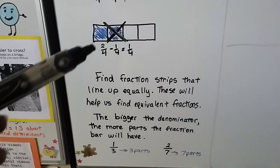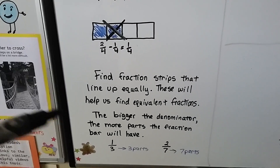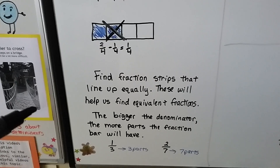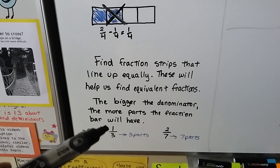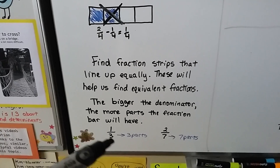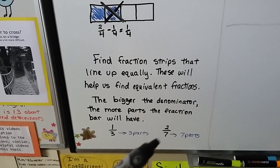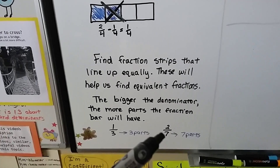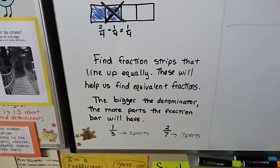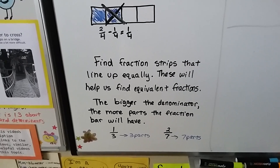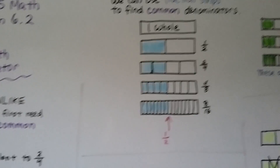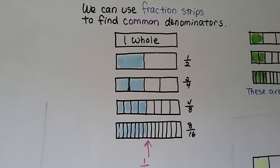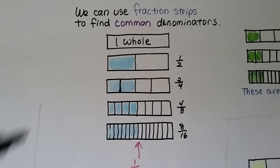The bigger the denominator, the more parts the fraction bar will have. One-third is going to have three parts. Two-sevenths is going to have seven parts. We can use fraction strips to find common denominators.